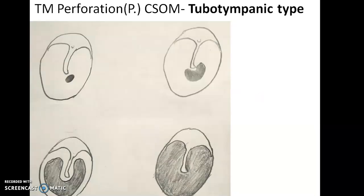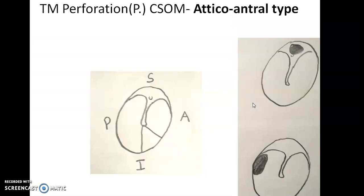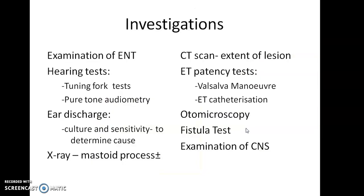Regarding perforation in the tubotympanic type of CSOM — it is usually small and central, or small to medium size, but it can also be a subtotal type where 90% of the tympanic membrane is gone except 10% of the annulus, or a total variety where the entire tympanic membrane is perforated. In atticoantral type, perforation is near the attic or in the posterior superior aspect of the tympanic membrane.